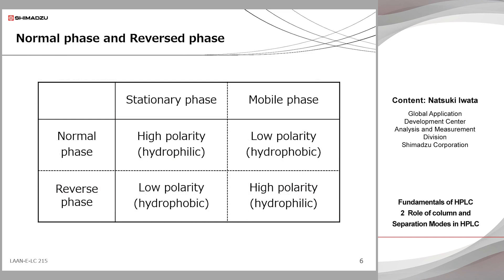Separation modes based on the difference in polarity of compounds in the sample are also called distribution modes. Here shows two types of distribution modes: the reversed phase and the normal phase. The reversed phase is a combination of less polar stationary phase and high polar mobile phase. To put it simply, if the stationary phase is oily and the mobile phase is watery, the oily compound can be retained because of the similar property of the mobile phase and the oily target compound. Technically speaking, when the compound is highly hydrophobic, the hydrophobic interaction to the stationary phase is large, so it can be retained. The opposite polarity combination of stationary phase and mobile phase is called the normal phase. In this case, watery or polar compounds have strong hydrophilic interaction with a highly hydrophilic stationary phase.